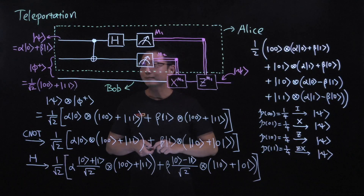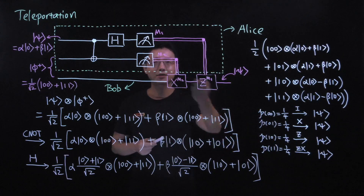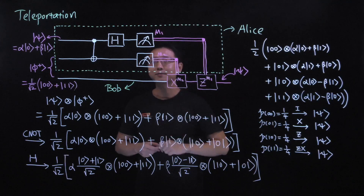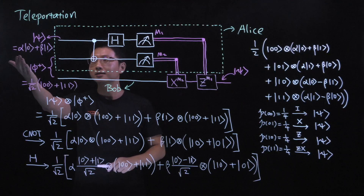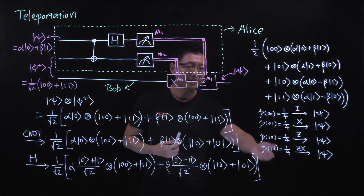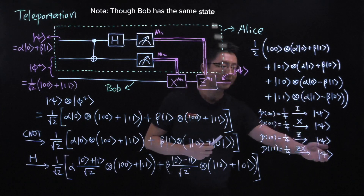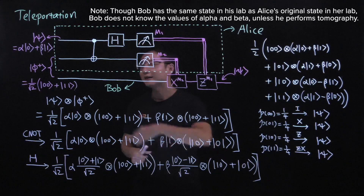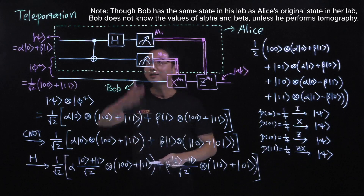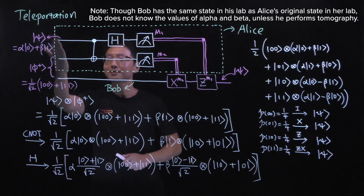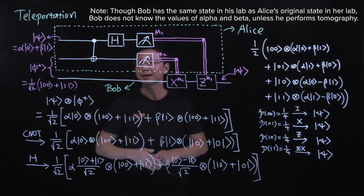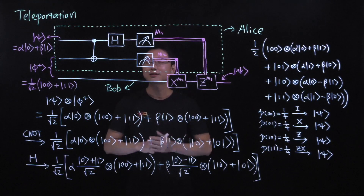Something quite remarkable is happening here: Alice only needs to send two classical bits of information to Bob — the results of her two measurements. But the values of alpha and beta are complex numbers with a continuous spectrum of amplitudes and phases, yet Bob will have that state in his lab. This would not be possible if Alice and Bob did not share the entangled state at the beginning. So in this protocol, we can see the power of entanglement: the information on the state of a qubit can be teleported from one place to another, which is not possible without entanglement. Entanglement can be thought of as a resource shared between Alice and Bob, and this is not possible in classical communication.